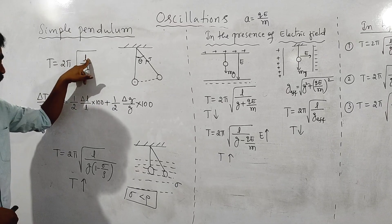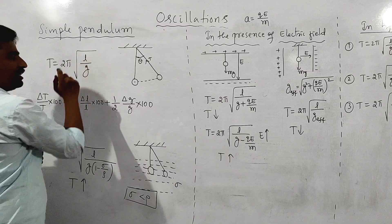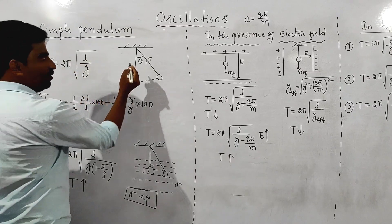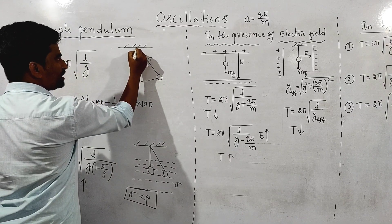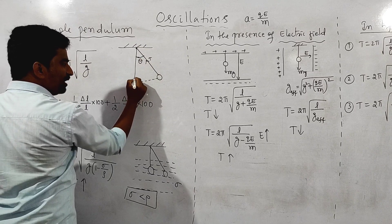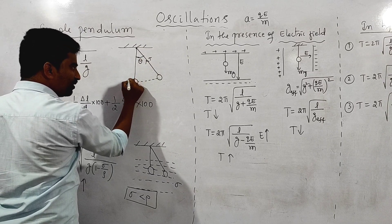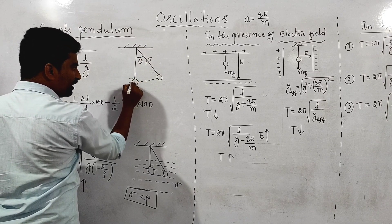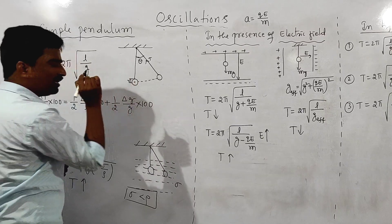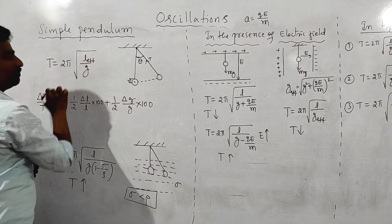This is the length of the simple pendulum — specifically, this is the effective length. Effective length is measured from the pivot (fixed point) to the center of mass of the bob. So this distance from pivot to the bob's center of mass is the effective length.